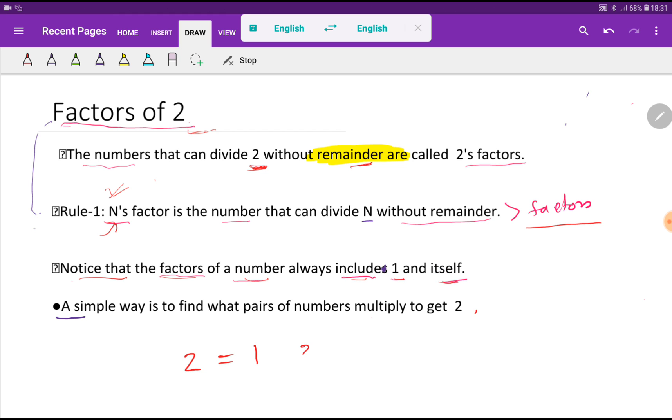A simple way is to find what pairs of numbers multiply to get two. So if I multiply one times two, then I will get two. So one and two are the factors of two.